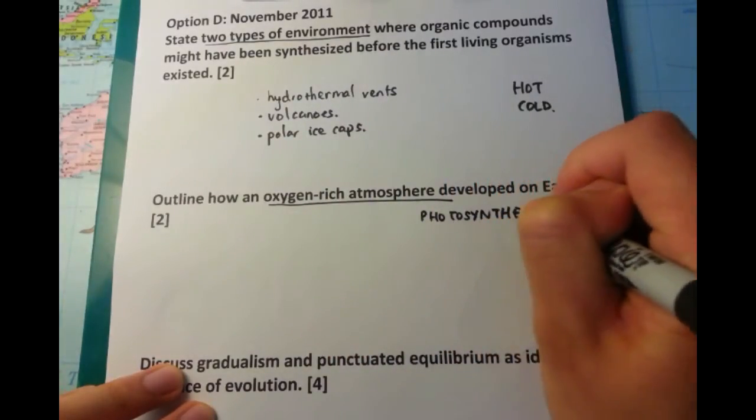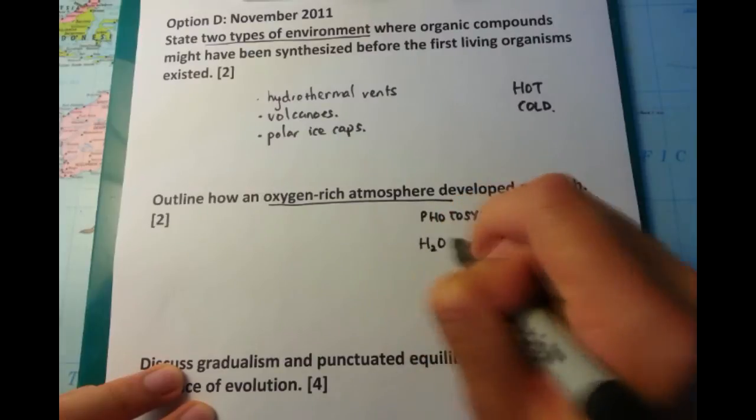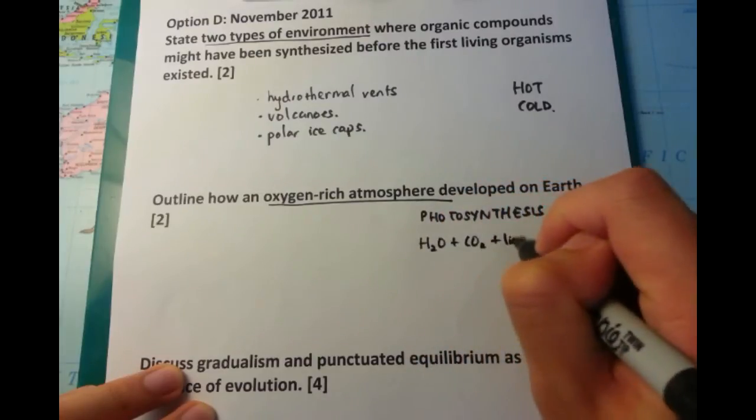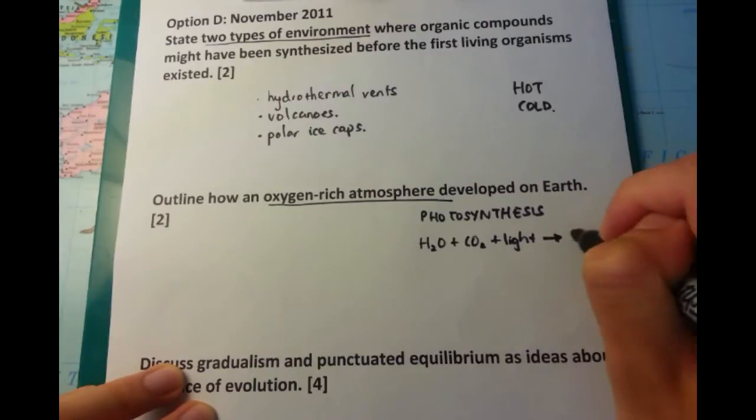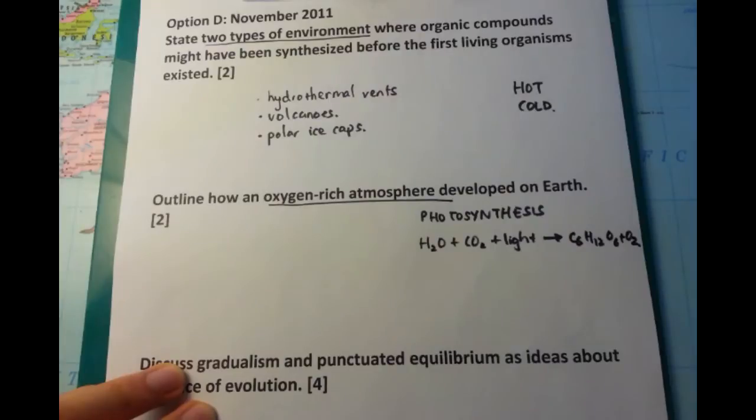The key point to know about this particular question is to understand that photosynthesis is the basis for all oxygen on Earth. And I've drawn the equation for it here. Water plus carbon dioxide plus light goes to glucose as well as oxygen.